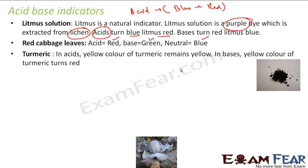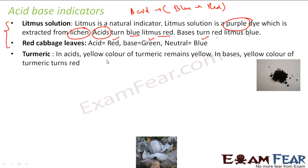Turmeric is another indicator. It is yellow by default and remains yellow even if you put acid — no effect. But the moment you put base, it turns red. So unlike litmus, turmeric does not react to acid but does react to base by turning red.